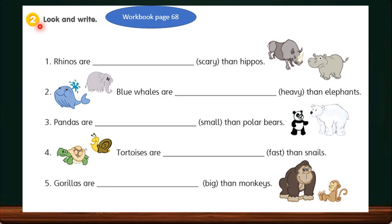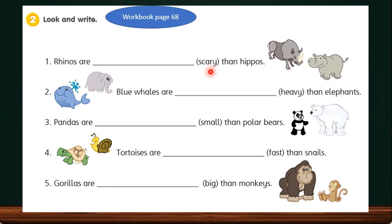Let us try the exercise in your workbook at page 68, Activity 2: Look and write. Number 1: Rhinos are ___ than hippos. We want to compare these two animals using comparative adjectives. The adjective scary has to change to its comparative form. We cannot simply add -er at the end of the -y. We have to remove the -y and add -ier, so scary becomes scarier in the comparative form.